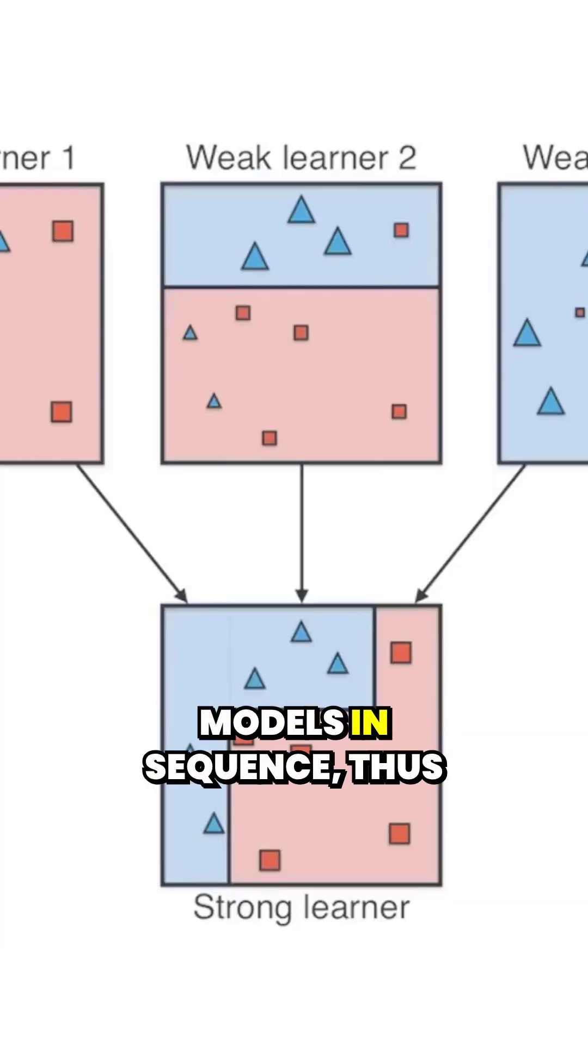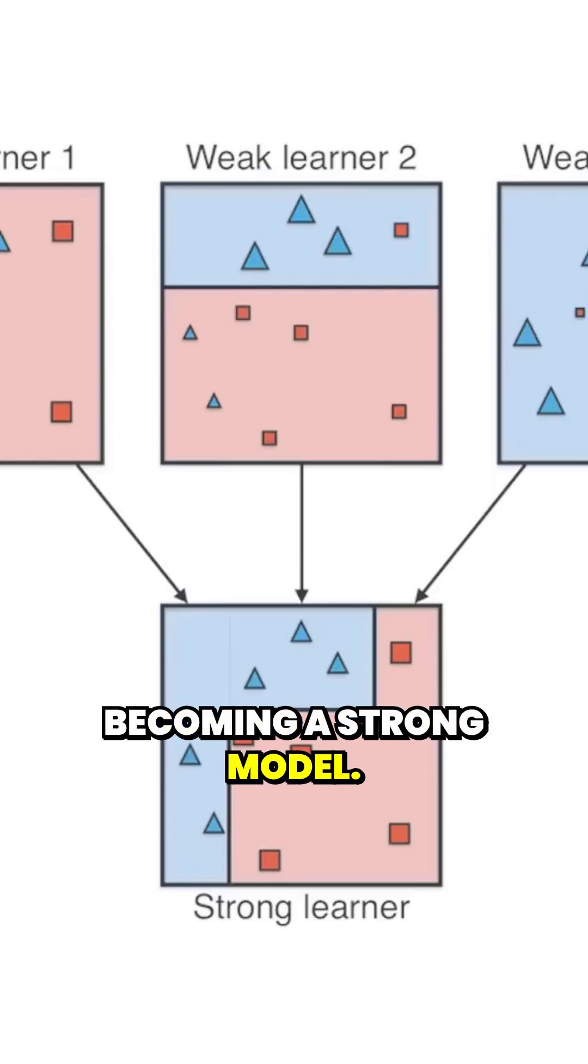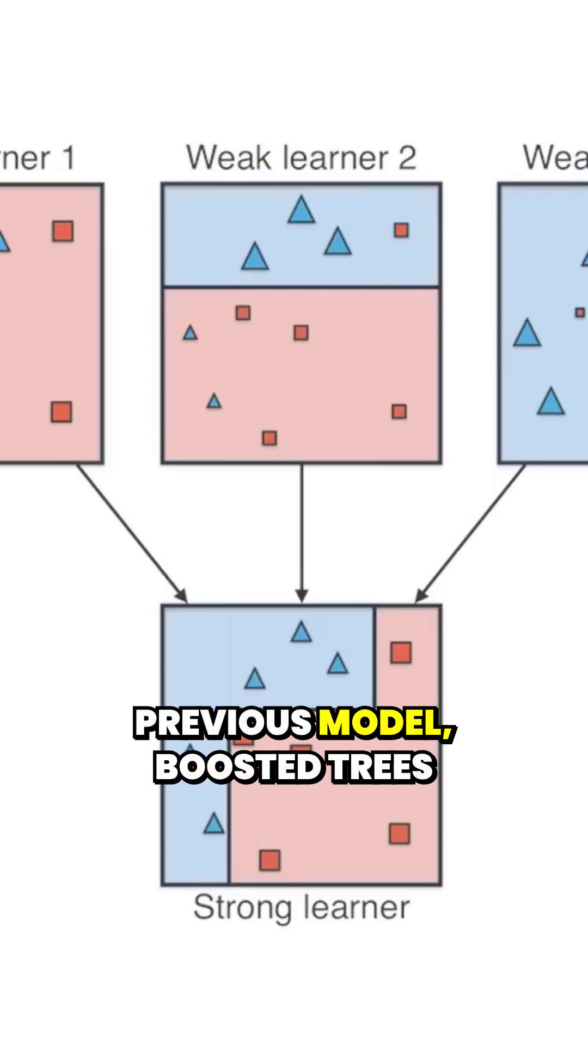We combine a series of weak models in sequence, thus becoming a strong model, because each sequential model tries to fix the errors of the previous model.